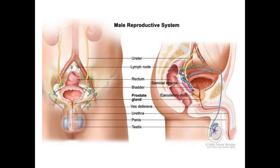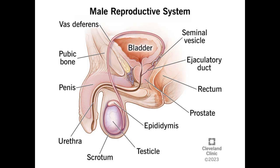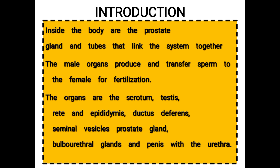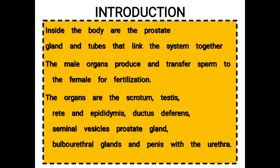I would like to use the next diagram. The organs are the scrotum, the testicle also known as testis, the epididymis, the penis, the seminal vesicle, the ejaculatory ducts, the rectum, the prostate, the urethra, and the penis itself. Those are the organs.